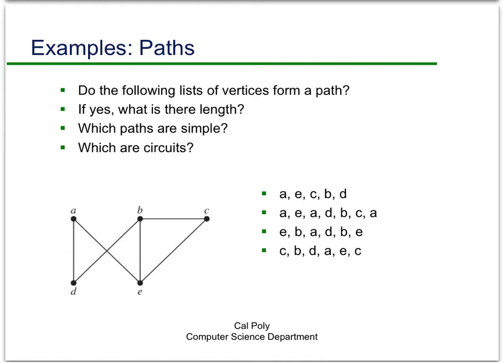I want you to look at the graph below here. For these different sequences of vertices, are they a path? If it is a path, what's its length? Is it a simple path? And which one of these sequences are circuits? Pause the video for a second, and then I'll come back and give you the answers.